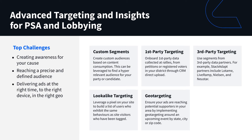If you're on the advocacy side and looking to influence policy, our custom segments can be leveraged there as well. DSPs have access to things like ABM targeting that we can use to find influencers in certain areas of policy. You can also geo-target audiences at the Capitol building or in certain district offices.